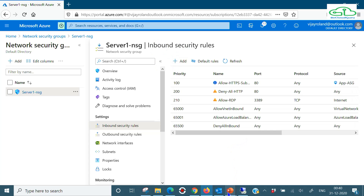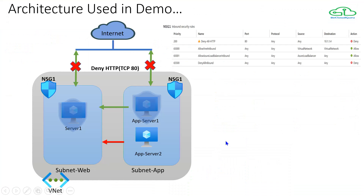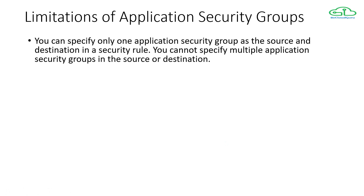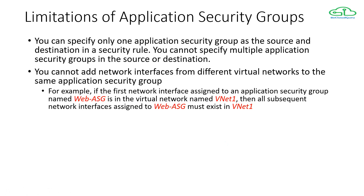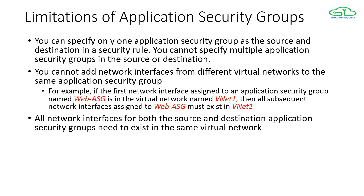Let's go back to the presentation and cover the limitations of application security groups. First, you can specify only one application security group as the source and one as the destination in a security rule — you cannot have multiple ASGs in either source or destination. Second, you cannot add network interfaces from different virtual networks to the same application security group. For example, if a NIC is assigned to web ASG in vnet1, all subsequent NICs assigned to web ASG must also exist in vnet1.